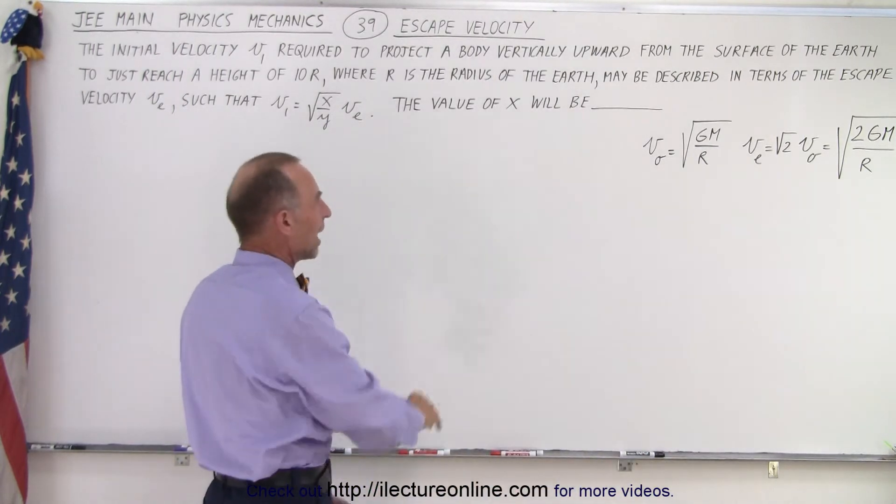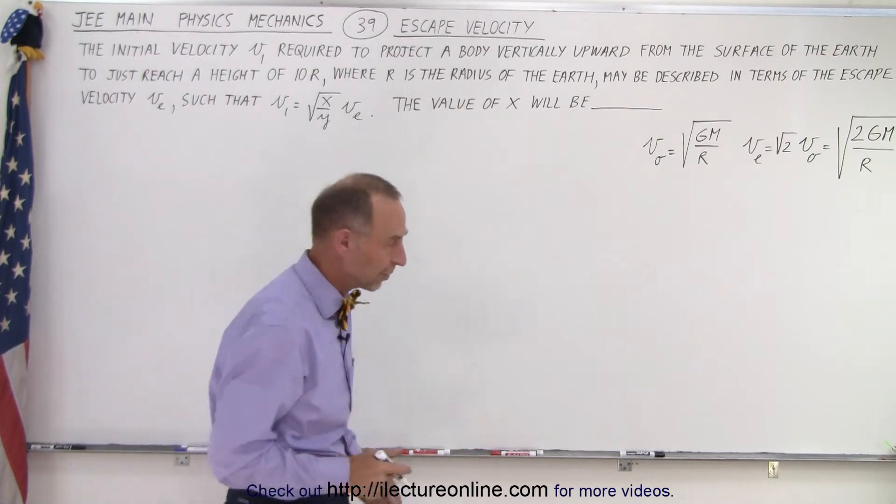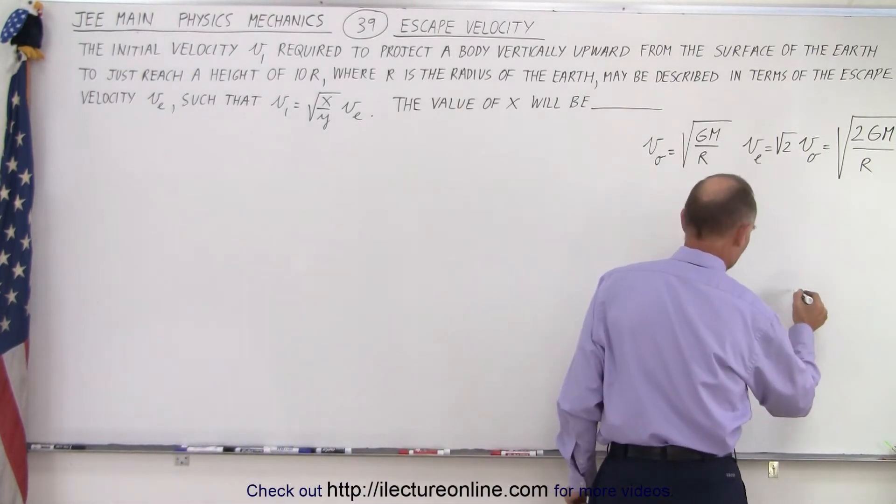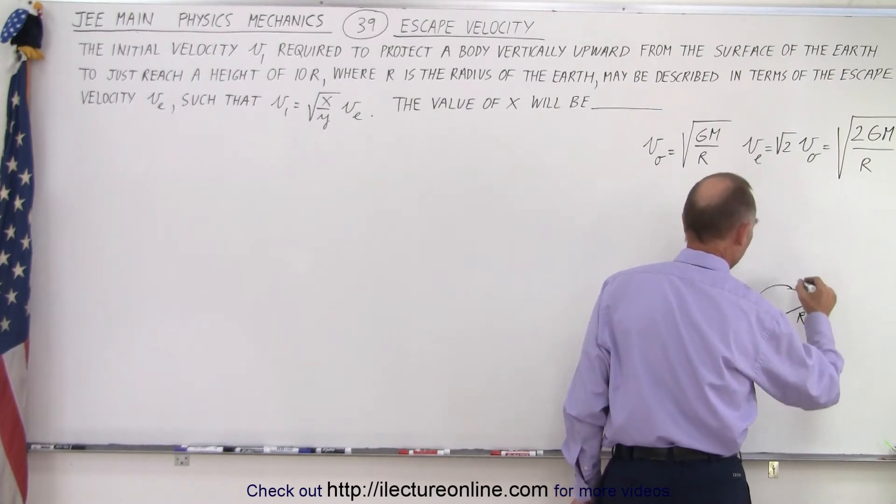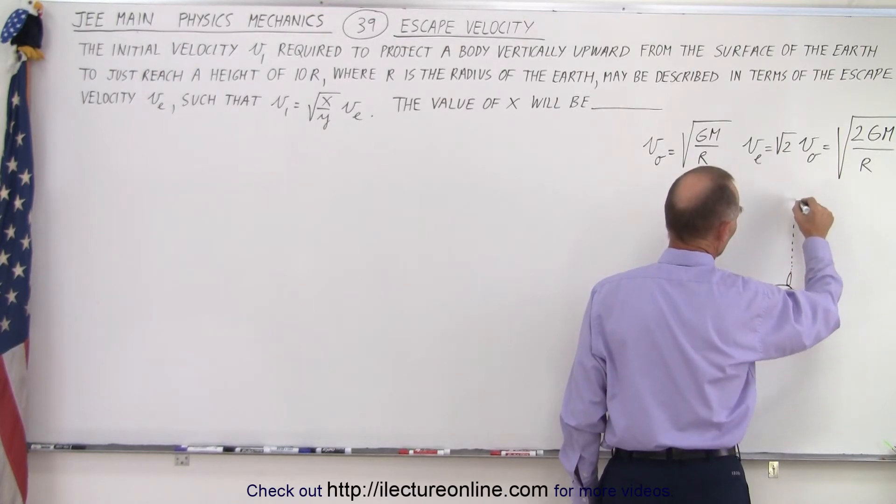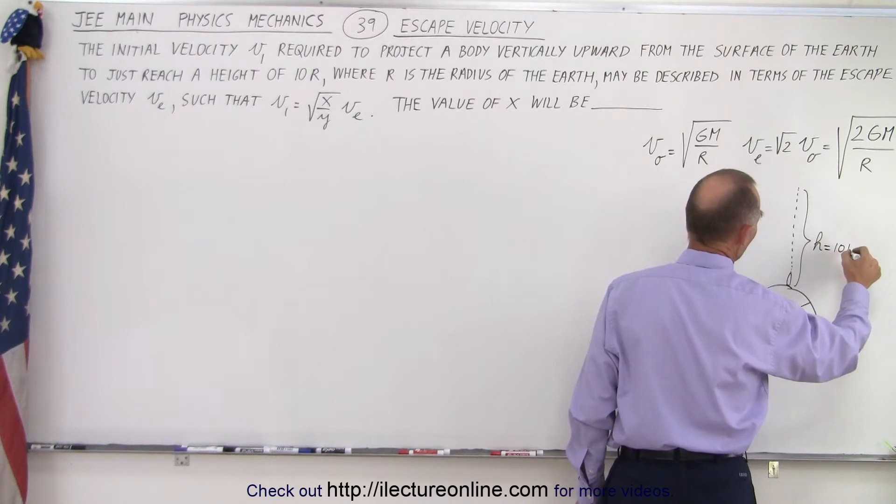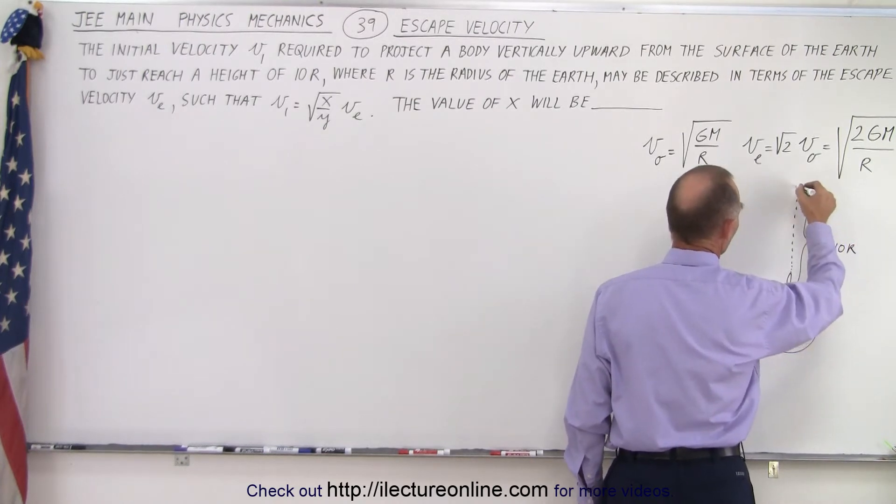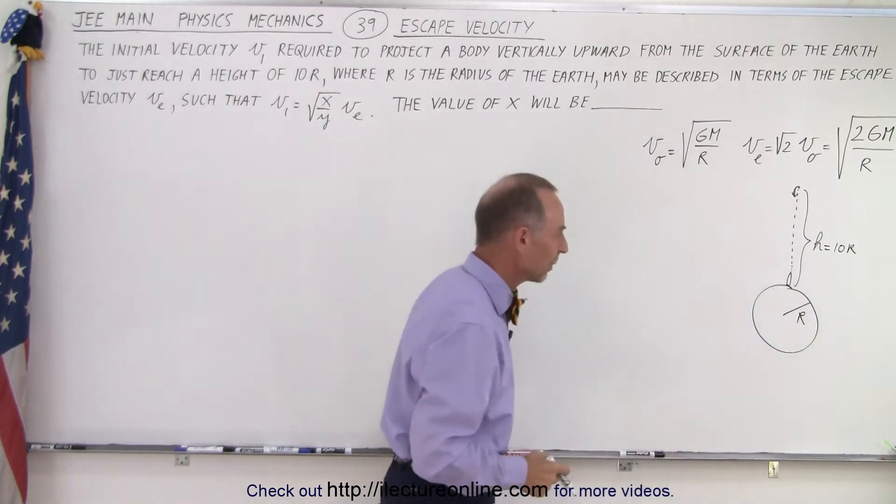Assume we know that. The next thing to do is maybe a little diagram will help us out. Let's say here's the earth, there's the radius of the earth r, and we are sending a rocket from the earth out to reach a height of 10r. So this height here h equals 10r, where the rocket will simply turn around and then fall back down because it reached the maximum height.